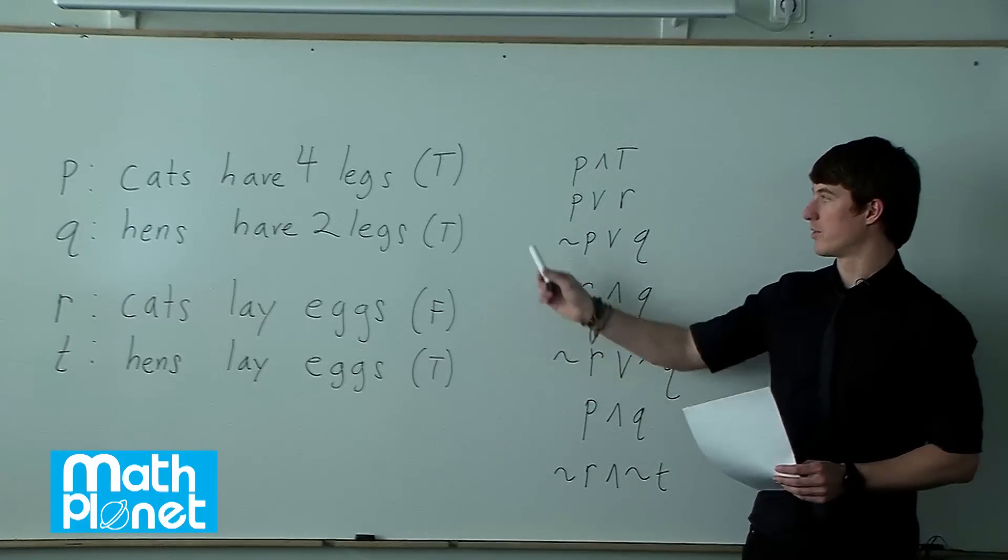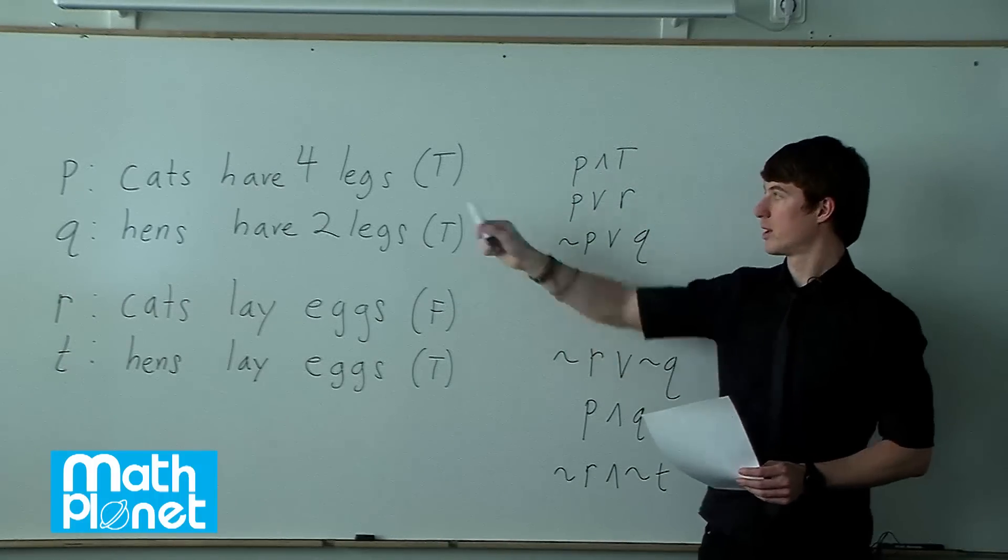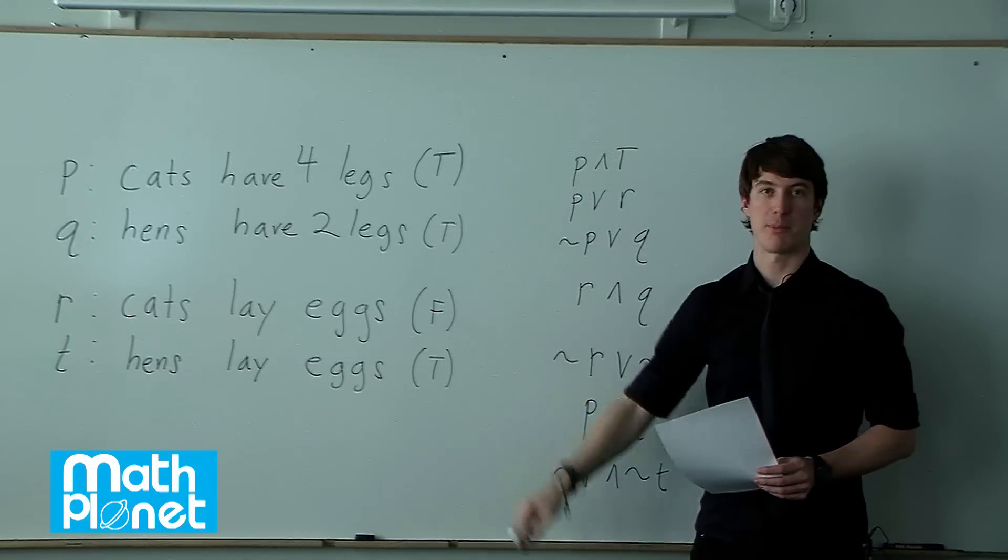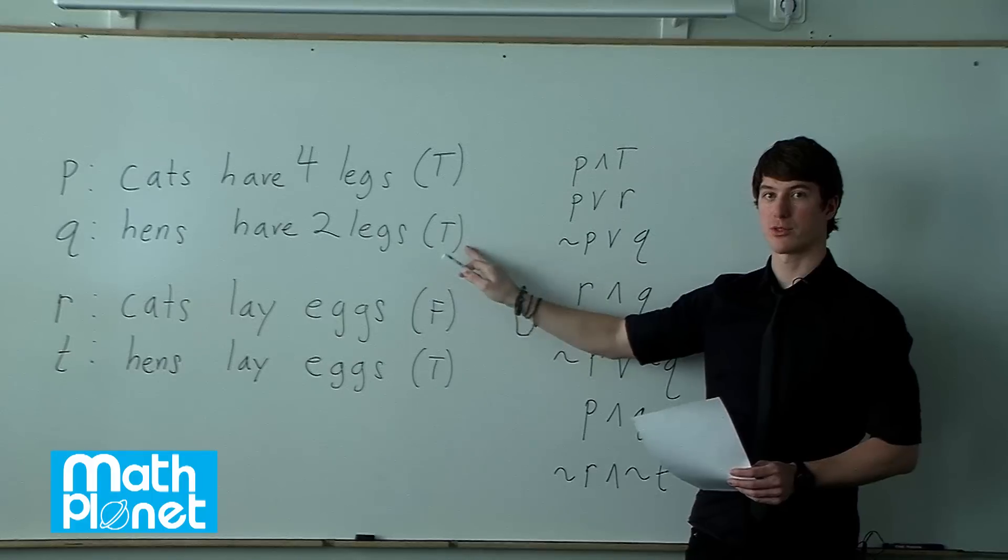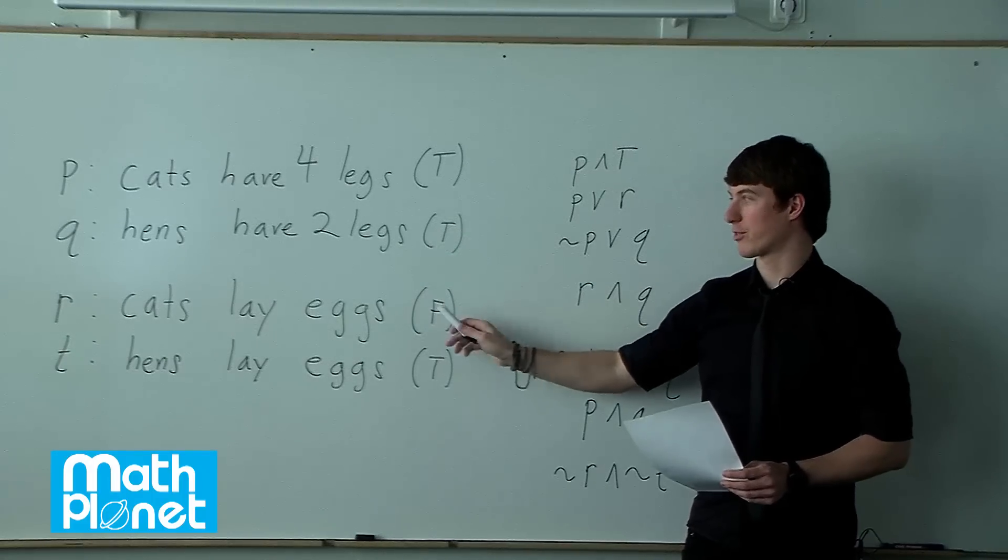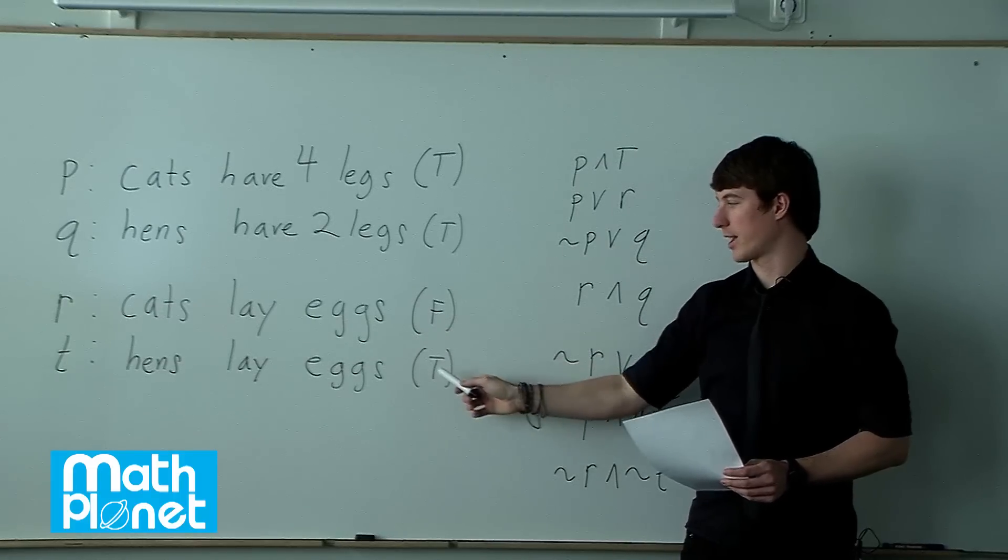So we have four statements. We've determined whether or not each of them is true or false. Cats have four legs is defined to be P, that's true. Hens have two legs is defined to be Q, that's true. Cats lay eggs is false, so R is false, and T, hens lay eggs, is true.